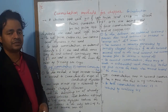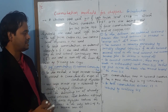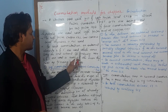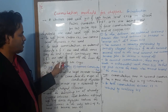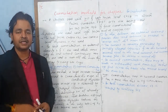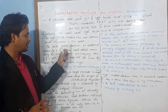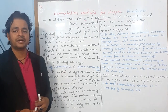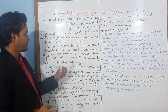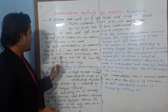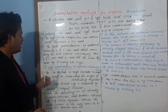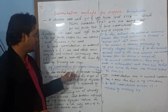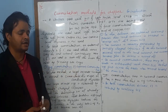In the force commutated chopper, there are two external elements: L and C, which do not carry the load current continuously. L and C are used to turn off the main thyristor by the following two methods.